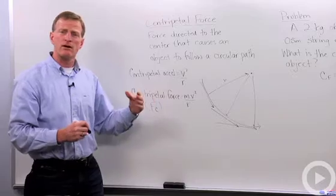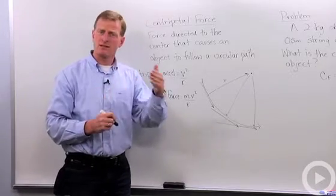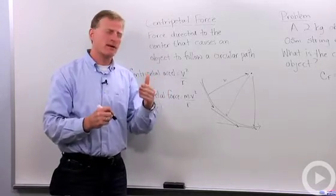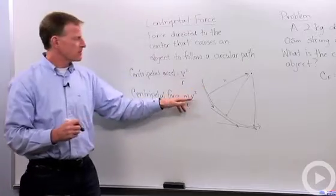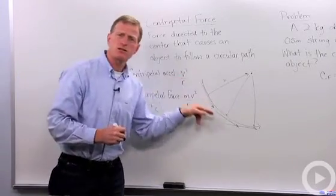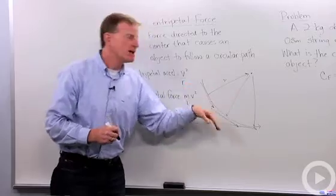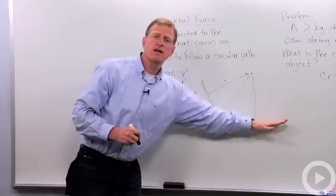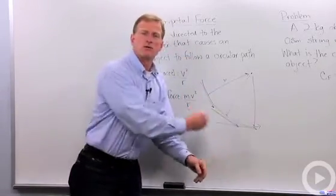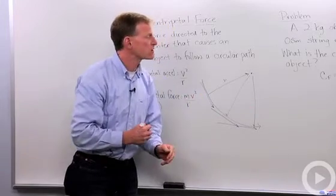The force itself, remember, a force is mass times acceleration, so now we need to multiply the mass of the object times the velocity squared and divide by the radius. And that will tell us what that centripetal force is that is allowing that object to change direction as it continues to revolve around the center of the circle.